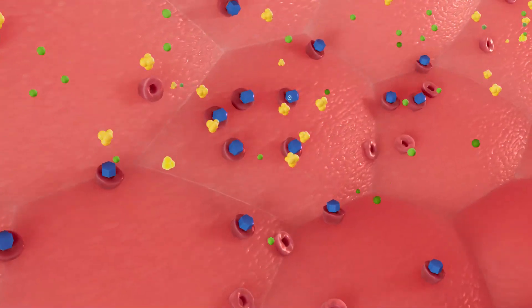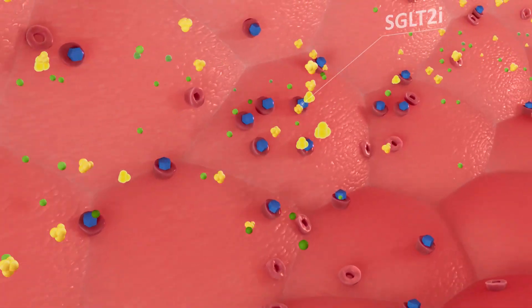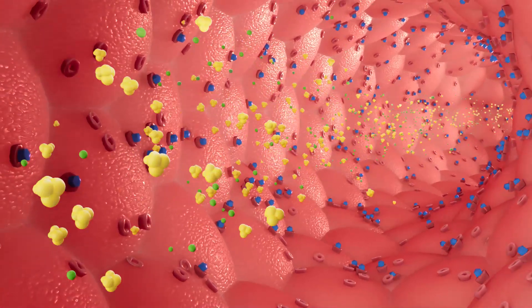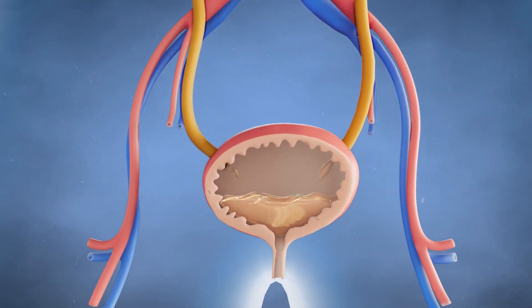SGLT2 inhibitors or SGLT2I block the reabsorption of filtered sodium and glucose back into the blood, causing increased excretion of both in the urine.